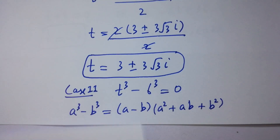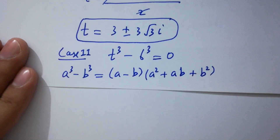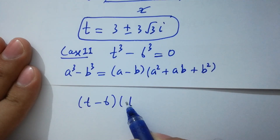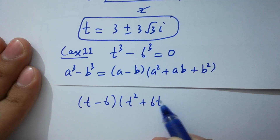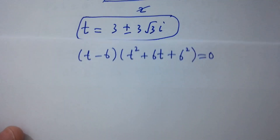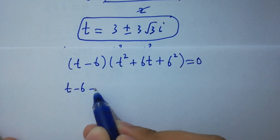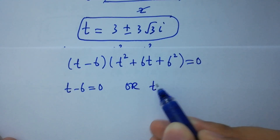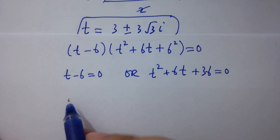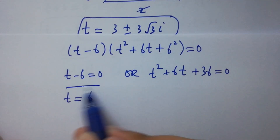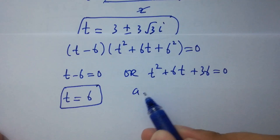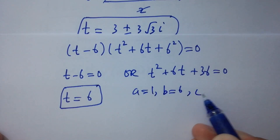Applying the formula, we get (t - 6)(t² + 6t + 36) = 0. Either t - 6 = 0, giving t = 6, or t² + 6t + 36 = 0, which is a quadratic equation with a = 1, b = 6, c = 36.